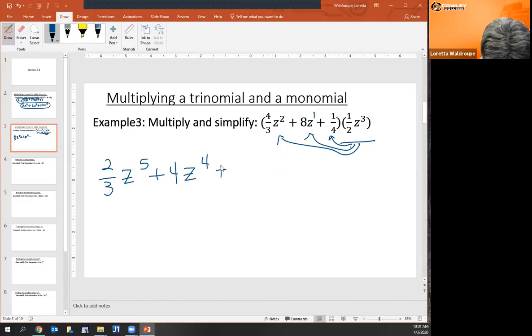One half times one fourth is an eighth and z to the fourth would be an eighth and you just have z cubed and you're done.